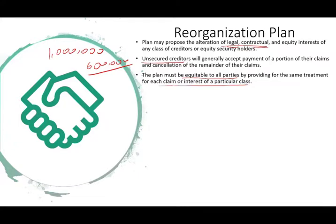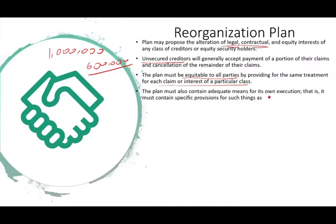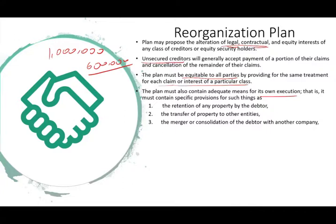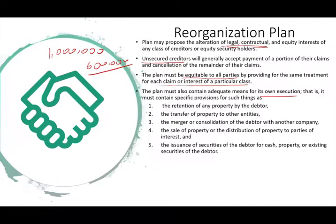The plan must also contain adequate means for its own execution — that is, it must contain specific provisions such as: the retention of any property by the debtor; the transfer of property to other entities; any merger or consolidation of the debtor with another company; the sale or distribution of property to parties of interest; and the issuance of securities of the debtor for cash, property, or existing securities. So basically, we have to have a clear and detailed plan.